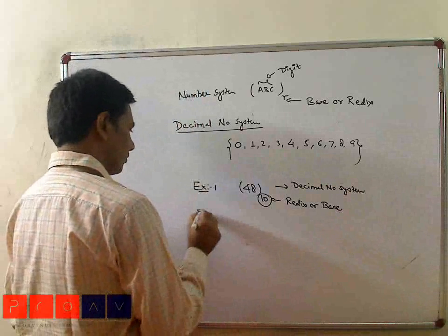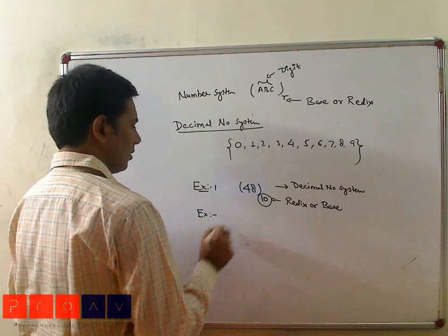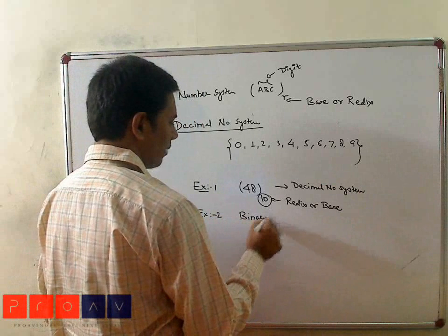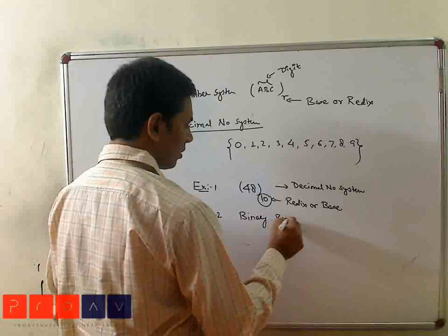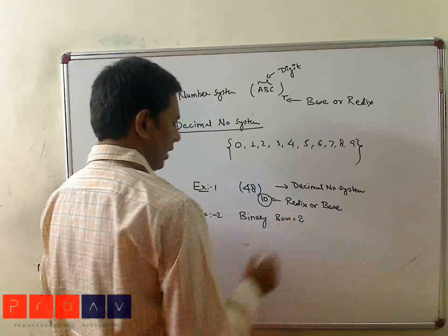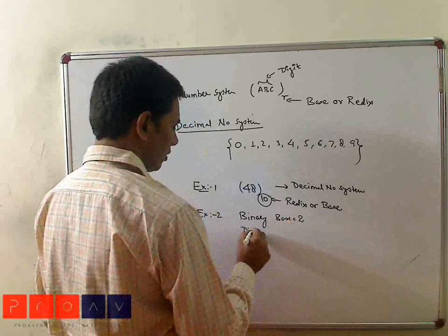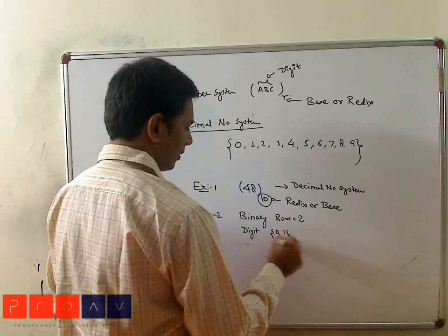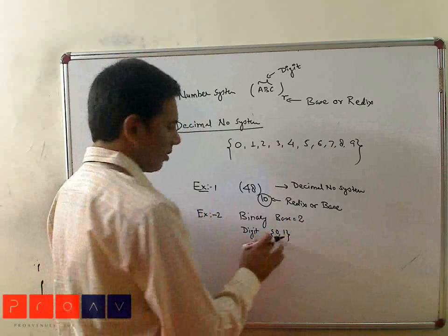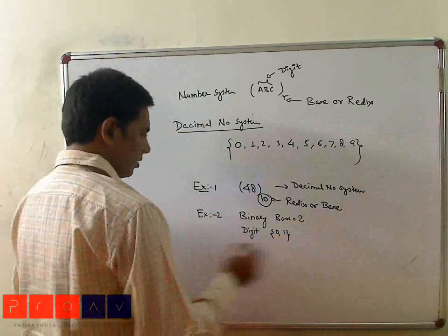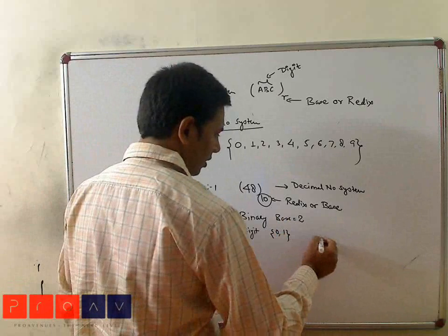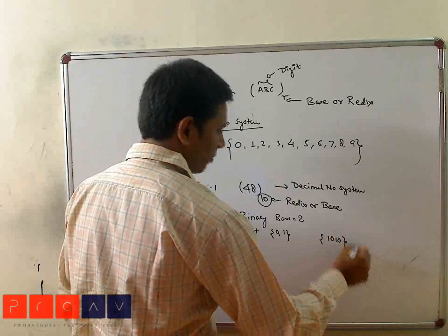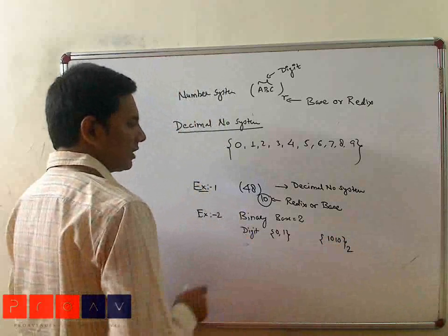Second is binary. Binary means base 2, and the digits are 0 and 1 — there are only two digits. For example, 1, 0, 1 with base 2. This is called the binary number system.